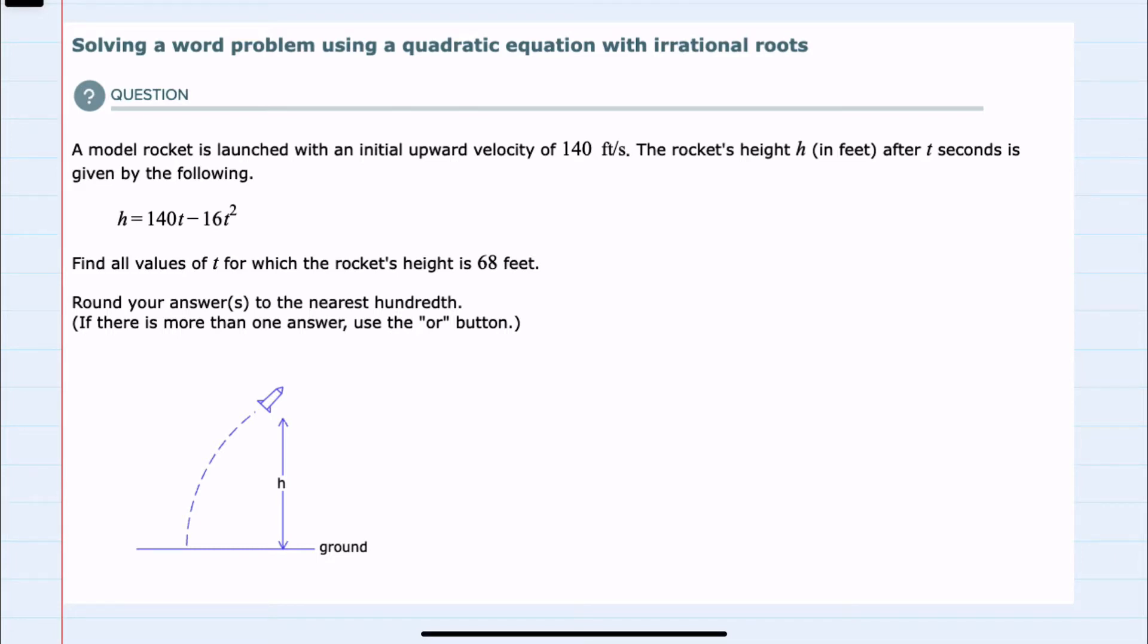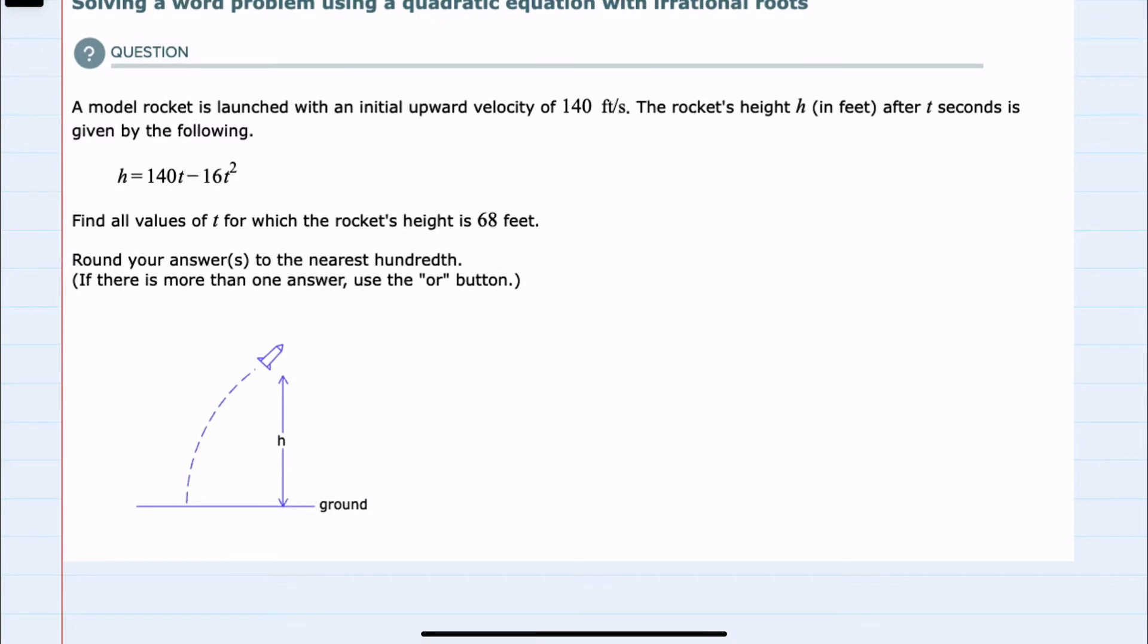We're told here that a model rocket is launched with an initial upward velocity of 140 feet per second. The rocket's height h in feet after t seconds is given by the following formula. Find all values for t for which the rocket's height is 68 feet. Round your answers to the nearest hundredth.